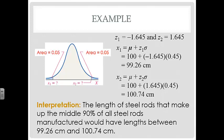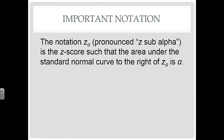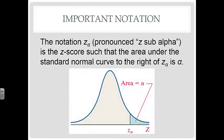The notation Z-sub-alpha refers to the Z-score such that the area under the standard normal curve to the right of Z-sub-alpha equals alpha. So alpha is the area to the right of that Z-score under the curve.